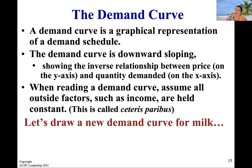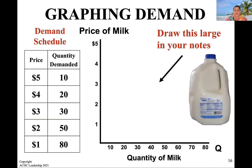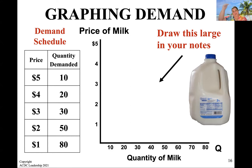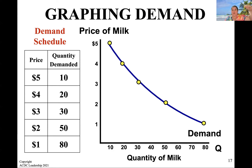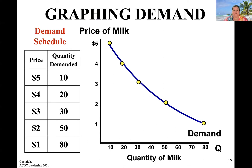Let's draw a demand curve for milk. Here's our demand schedule. If the price is $5, we're going to have 10 units quantity demanded. At $3, what happens? Quantity demanded significantly increases. So again, that downward sloping curve shows the relationship that as the price decreases, the quantity demanded increases.